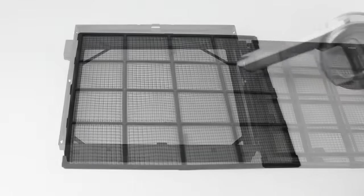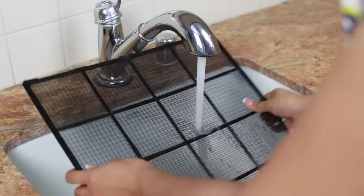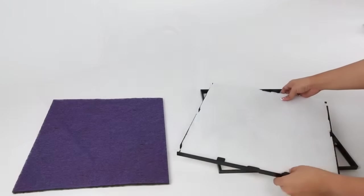Clean the permanent pre-filter by vacuuming it on both sides. Or if it is heavily saturated, you may wish to rinse it under plain, cool water and allow it to fully dry.